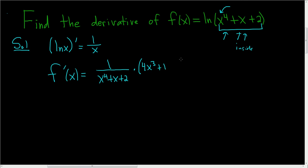And the derivative of 2 is 0, so we won't bother writing it. We could clean this up and write the final answer as 4x cubed plus 1 divided by x to the fourth plus x plus 2. And that's it.